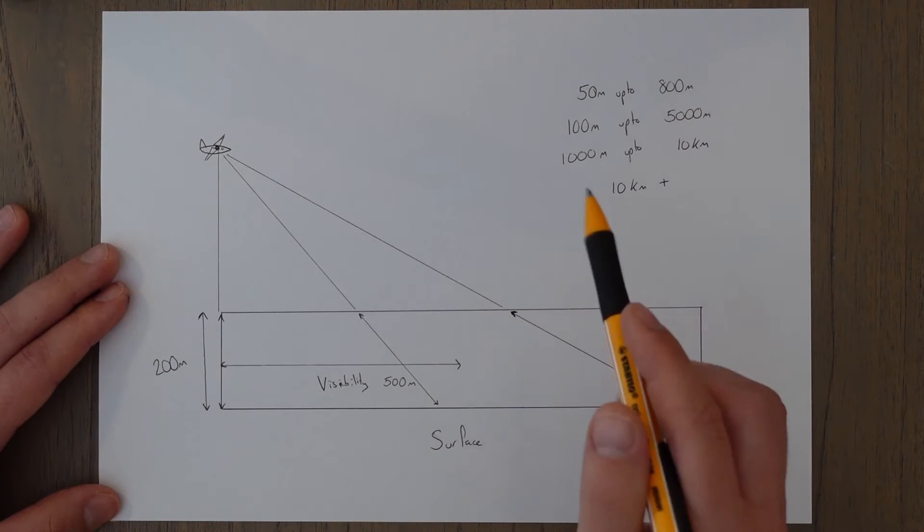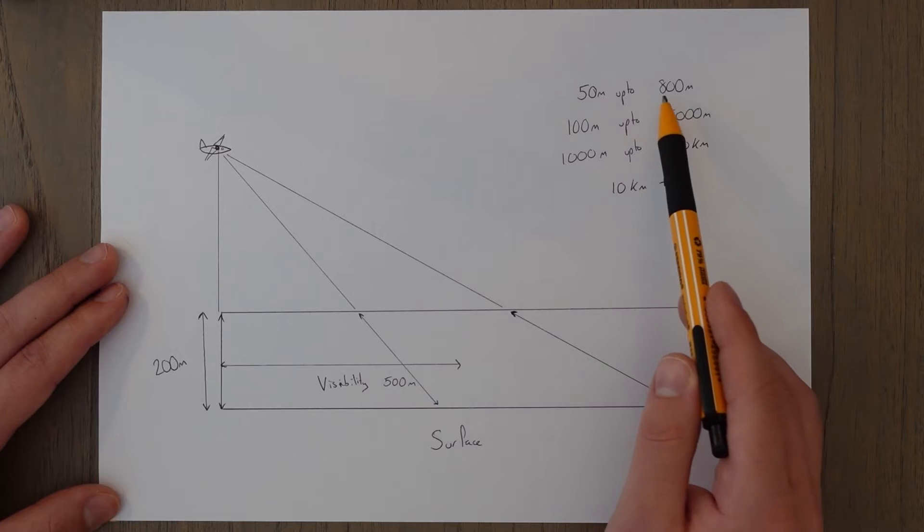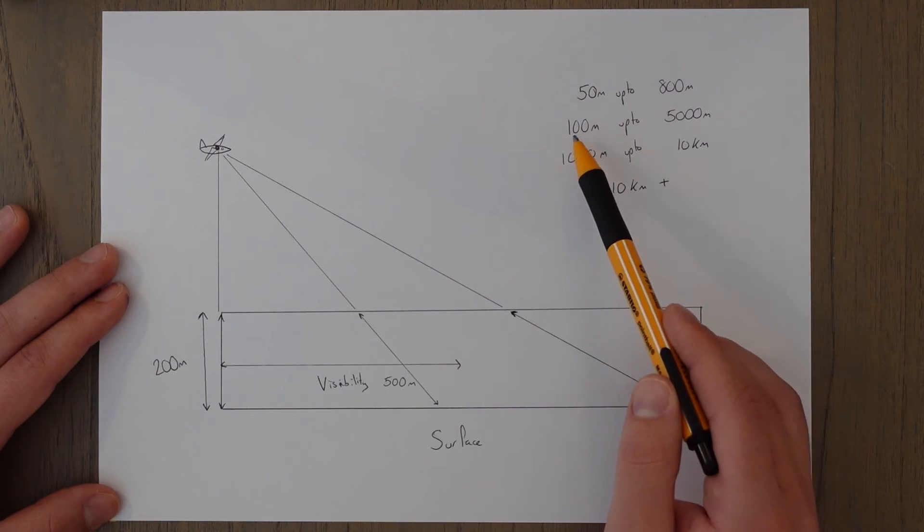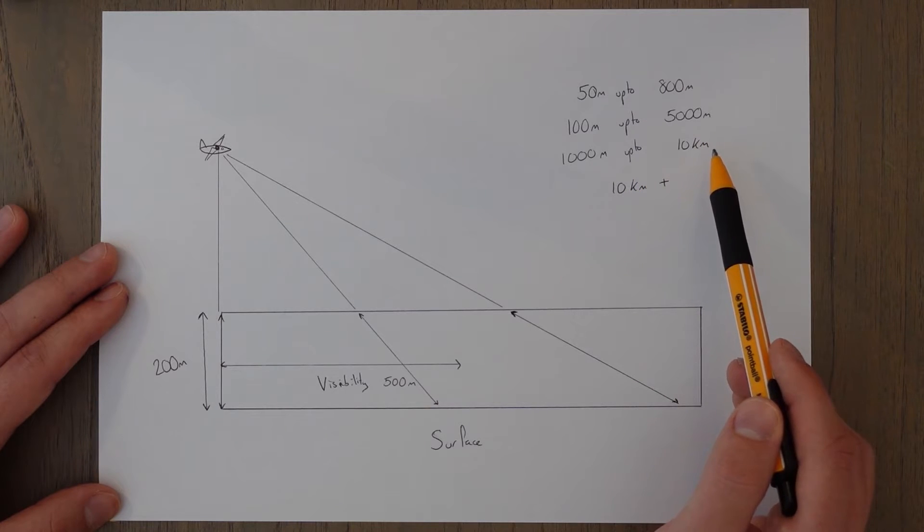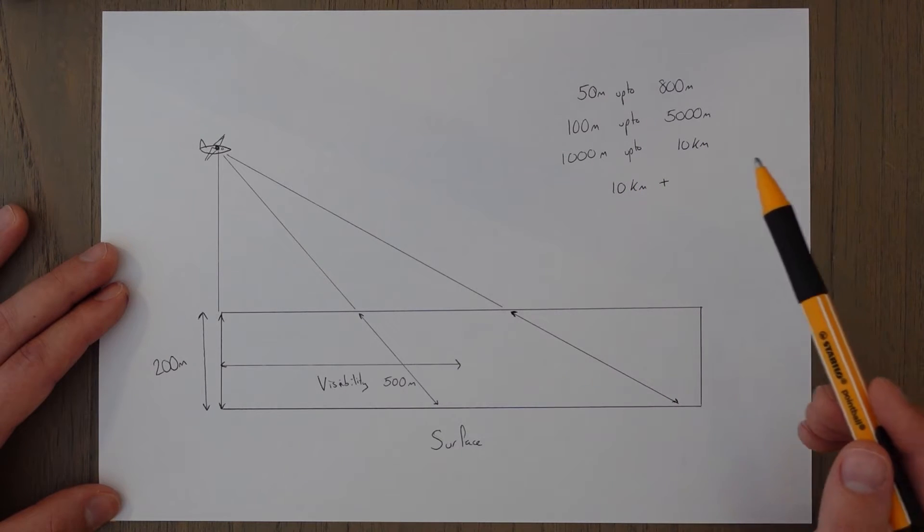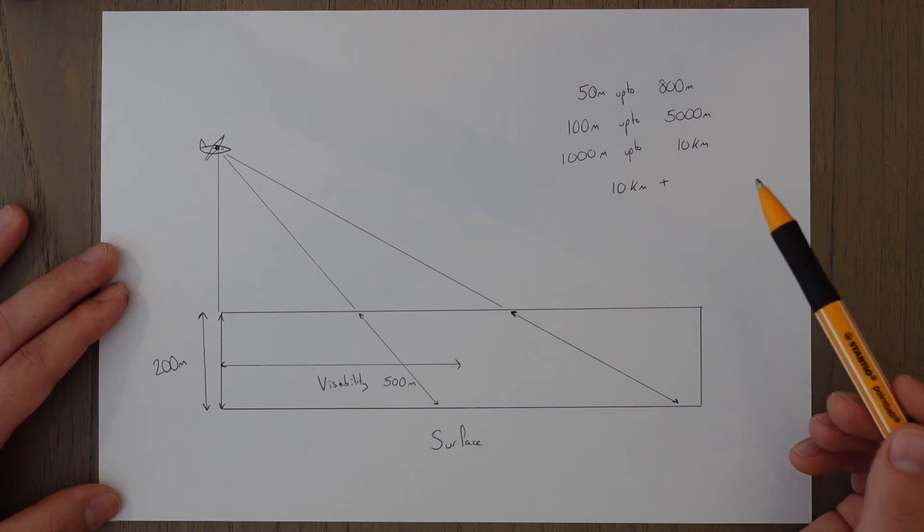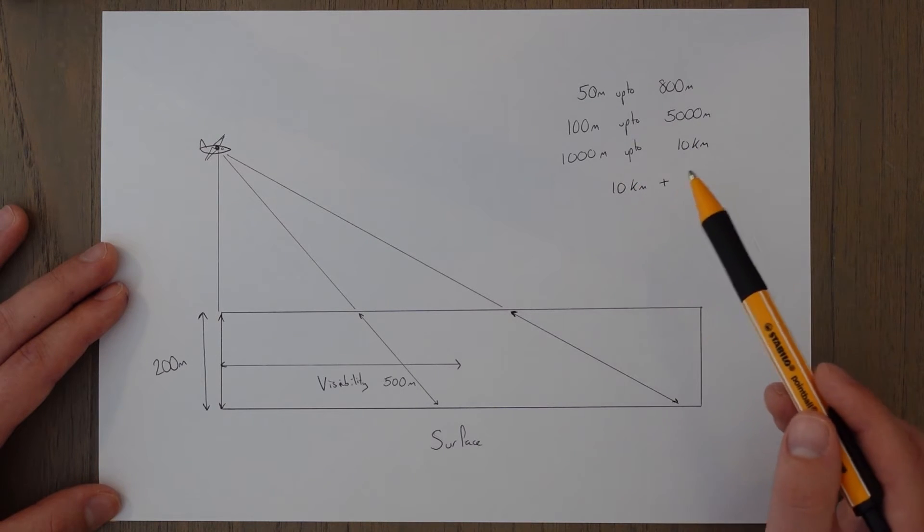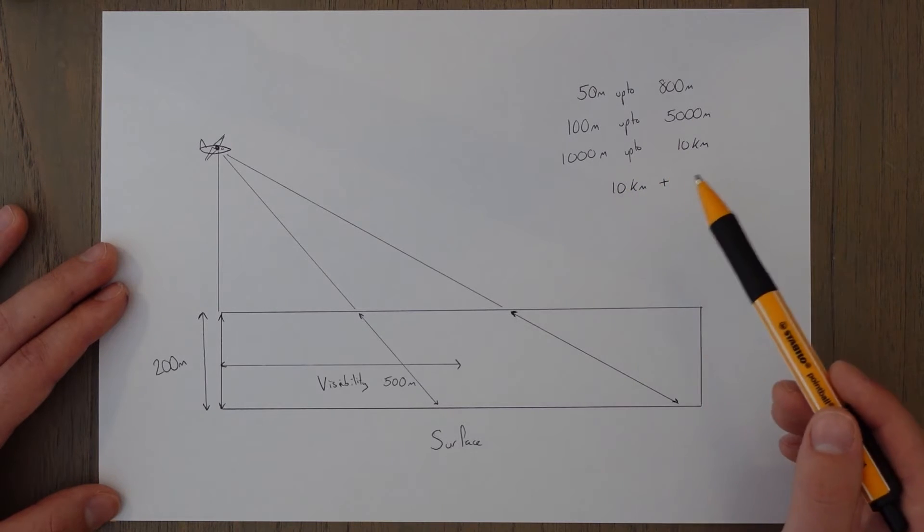Anyway, we measure visibility in 50 meter increments up to 800 meters, then 100 meter steps up to 5000 meters, and thousand meter steps up to 10 kilometers. And if the visibility is more than 10 kilometers you'll see a little plus on a weather report or you might see four nines, which means visibility is more than 10.